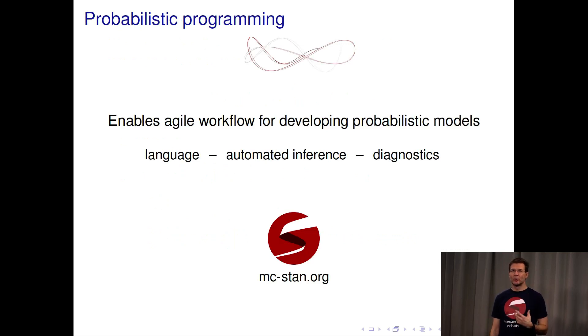In this course we use the probabilistic programming framework Stan. Probabilistic programming makes it easy to focus on the modeling part, describing the model. There's a probabilistic programming language to describe the models, and we have automated inference. When you change or modify the model, it's quick to remake the inference. We go through Markov chain Monte Carlo methods so you understand what's going on behind the scenes. When you go to more complex models, it is enough that you understand what's going on, but you don't need to develop or write your own inference methods for each new model. Probabilistic programming frameworks also provide diagnostics because automated inference is not foolproof.